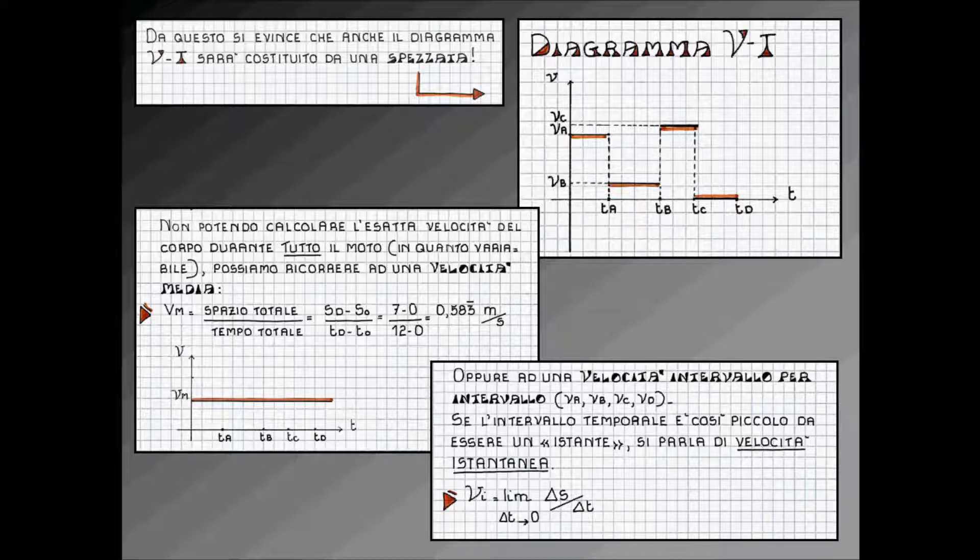In alternativa, è possibile calcolare la velocità intervallo per intervallo, come abbiamo fatto noi calcolando VA, VB, VC e VD.